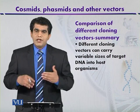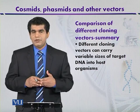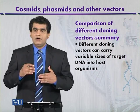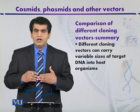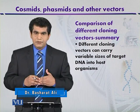Next, we discussed some plasmids of the bacteriophage lambda that have the ability to clone up to 23 kilobase DNA fragments, especially if we use a replacement type of vector. Here we discussed different types of Charon vectors.